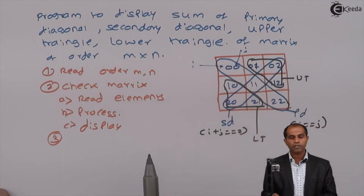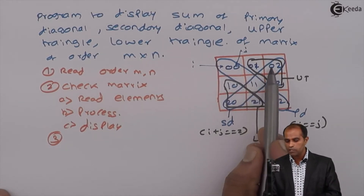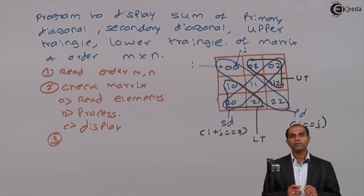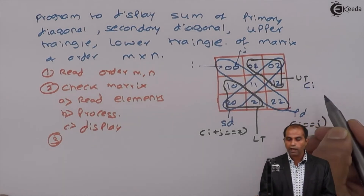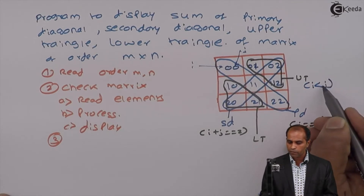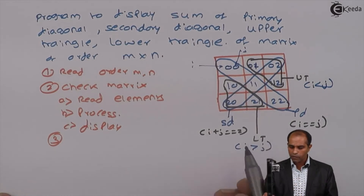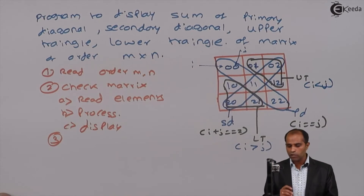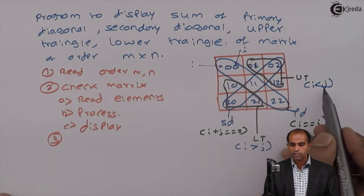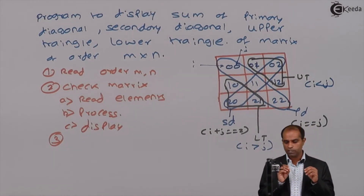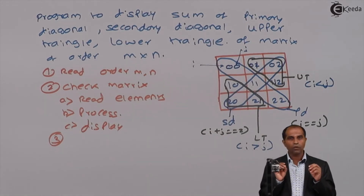Let's observe the upper triangle elements. In the upper triangle: I=0, J=1; I=0, J=2; I=1, J=2. The unique thing is that I is always less than J. So the condition for upper triangle is I < J. For the lower triangle, the condition is I > J — you find elements at 1,0; 2,0; and 2,1. To summarize: primary diagonal: I == J; secondary diagonal: I + J == 2; upper triangle: I < J; lower triangle: I > J.